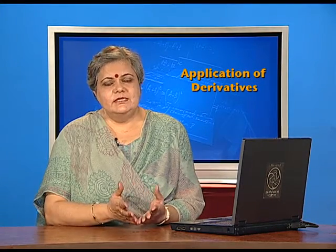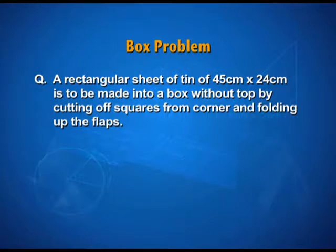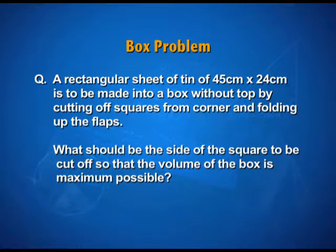We will start with one of the regular, most standard questions, and if you are one of the CBSE students, then one of the very favorites of the CBSE exam as well, a question known as a box problem. The statement is long, but it is one of the questions from your NCERT textbook. The statement says, a rectangular sheet of tin of 45 centimeter by 24 centimeter is to be made into a box without top by cutting off squares from corners and folding up the flaps. What should be the side of the square to be cut off so that the volume of the box is maximum possible?